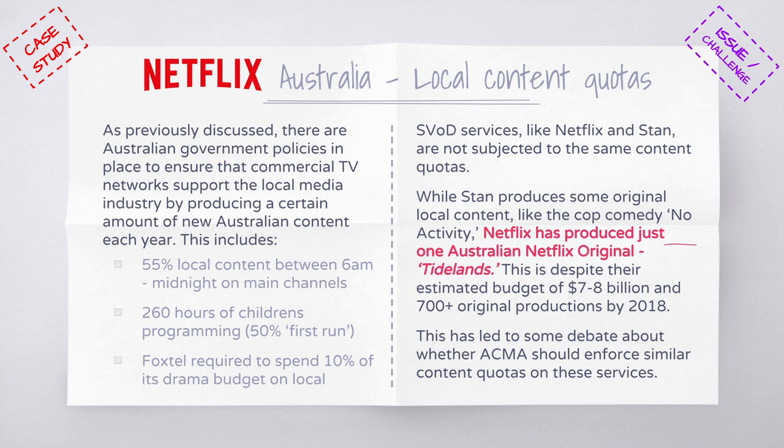Another way the government tries to regulate media in Australia is through local content quotas. Rules imposed on commercial television networks require that 55% of local content must be aired between 6am and midnight on channels 7, 9, and 10. There are also rules about children's programming, first-run drama, and a points system based not just on hours screened but also on jobs created and how prominently Australian drama is placed on the network.